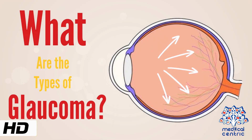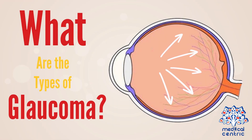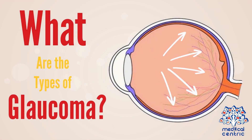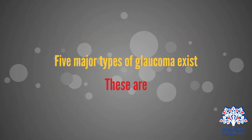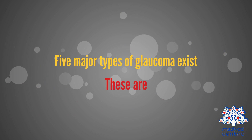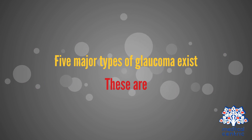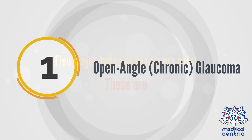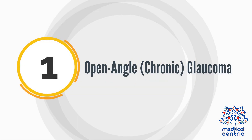Today's topic is what are the types of glaucoma? Five major types of glaucoma exist. These are: open angle or chronic glaucoma.